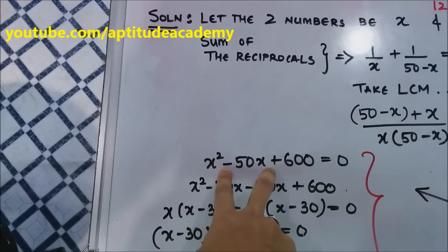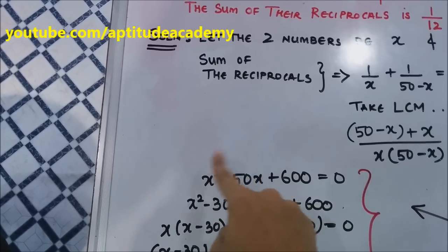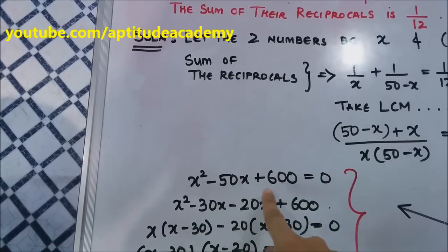When you're factorizing, you need to make sure that when you divide this -50 into two terms, when you add them up they will be -50, but when you multiply them, they will be +600.